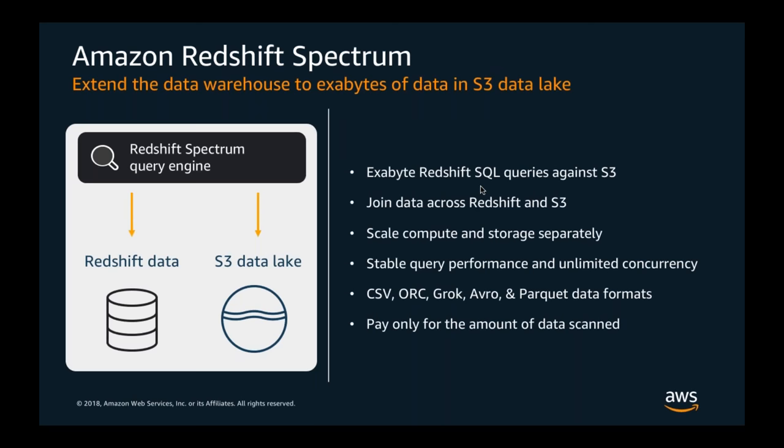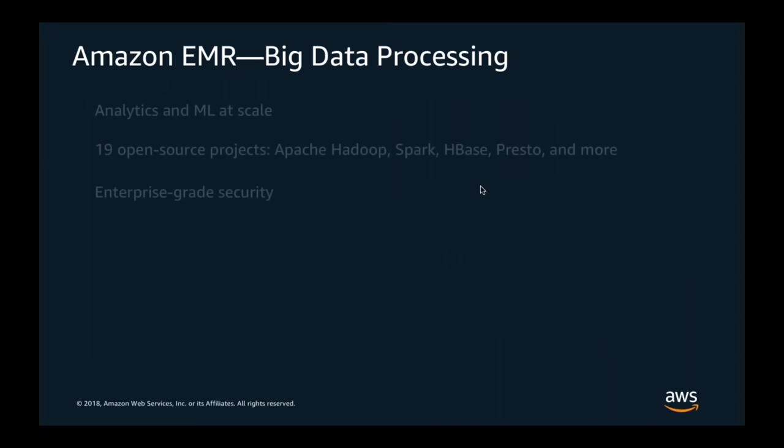Redshift Spectrum allows you to seamlessly extend your data warehouse to the S3 data lake. Using Spectrum you can fire SQL queries directly against data in Amazon S3. In this model, you can keep some data within Redshift and some in S3, run analysis across both with joins, and you only pay when you use Spectrum — if no query leverages Spectrum, you're not charged.